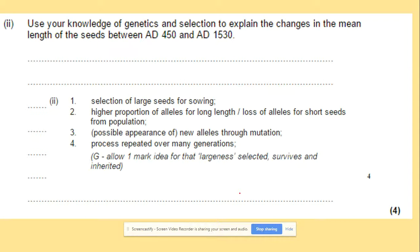Use knowledge of genetics and selection to explain the changes in mean length. The same keywords apply: selection of the advantageous alleles — the larger length is advantageous — leading to a higher proportion of long-length alleles. New alleles appear through mutation and are repeatedly passed on to the next generations.